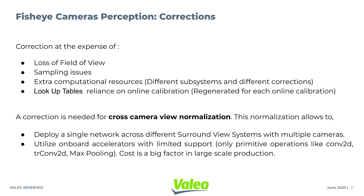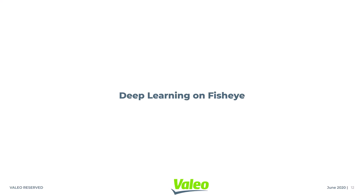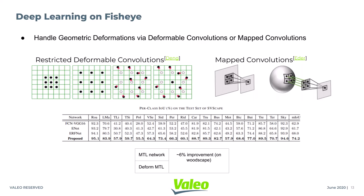We can utilize low-power hardware accelerators with limited support, as geometrical knowledge need not be encoded. Using deformable convolutions, we can learn the geometric and implicit object deformations in image space itself. Or, we can use map convolutions to decouple the sampling and convolutional operations, allowing the sampling to be a task-specific or domain-specific mapping function.